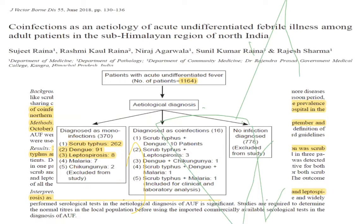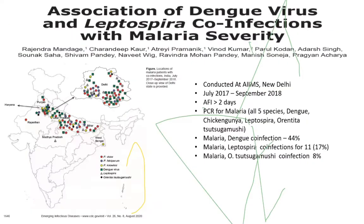It is important in every tropical fever to consider co-infection because every infection may not have the same treatment. A paper from AIIMS studied co-infections over one year using PCR for all five malaria species, dengue, leptospira, and scrub typhus. Malaria and dengue co-infection was most common; malaria-leptospira was seen in 17% of cases and malaria-scrub typhus in 8% of cases.